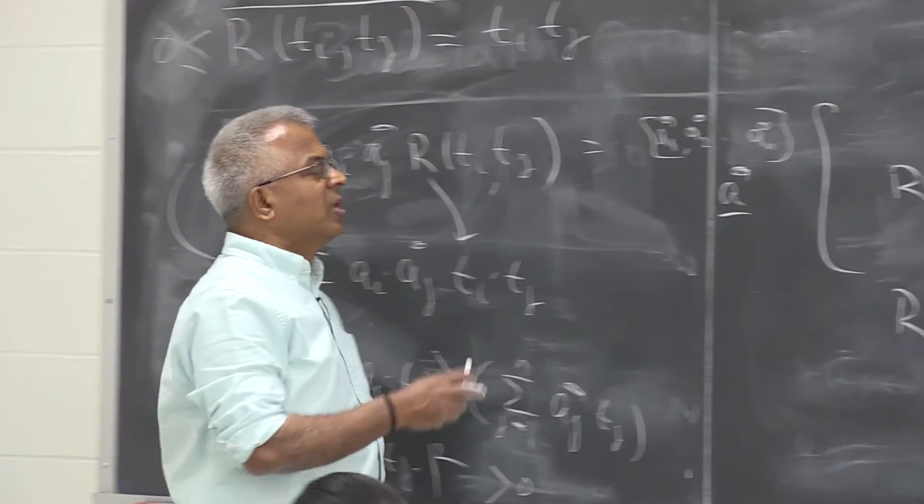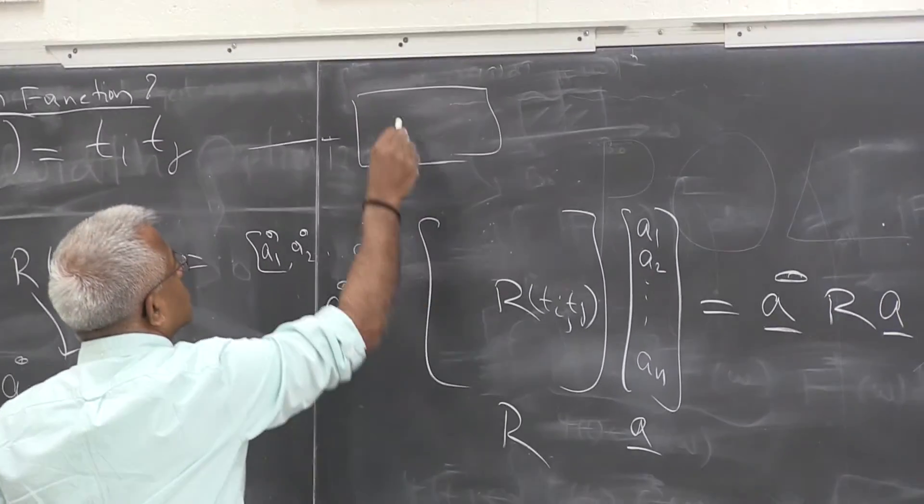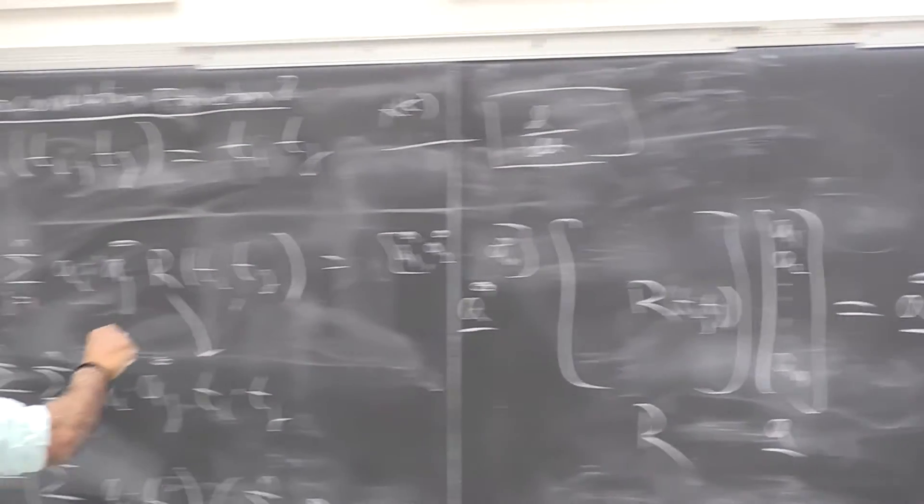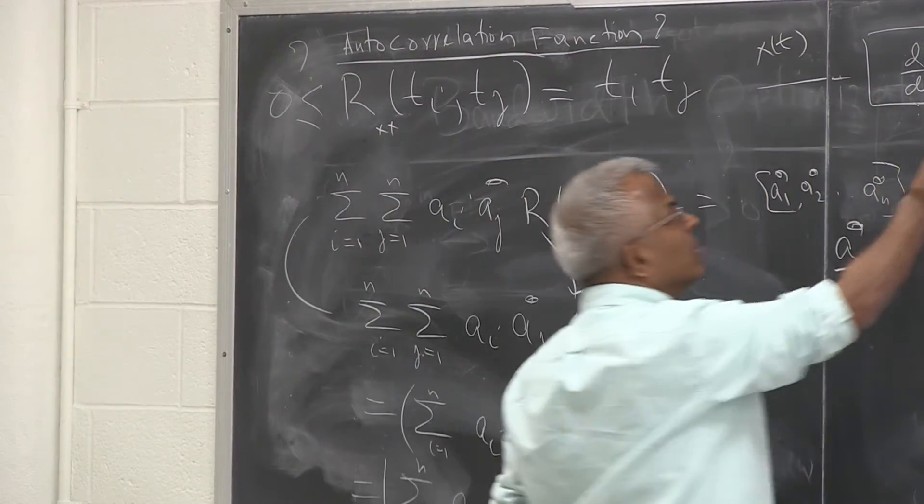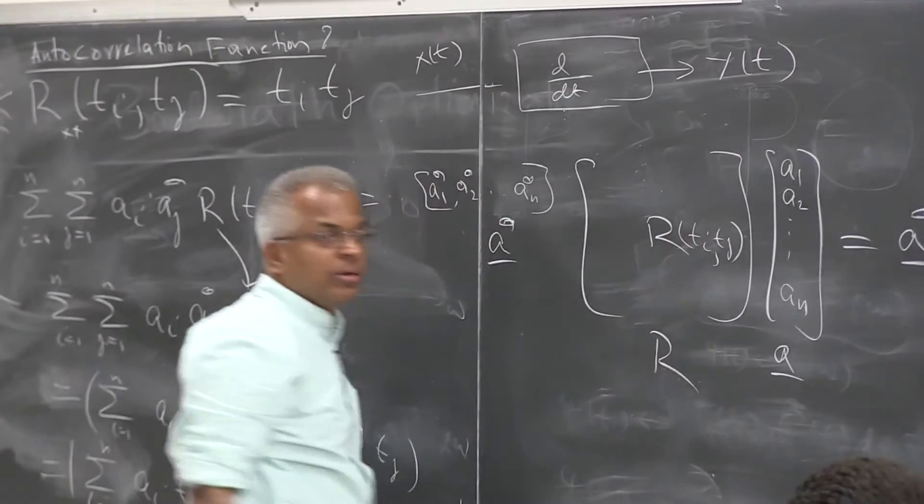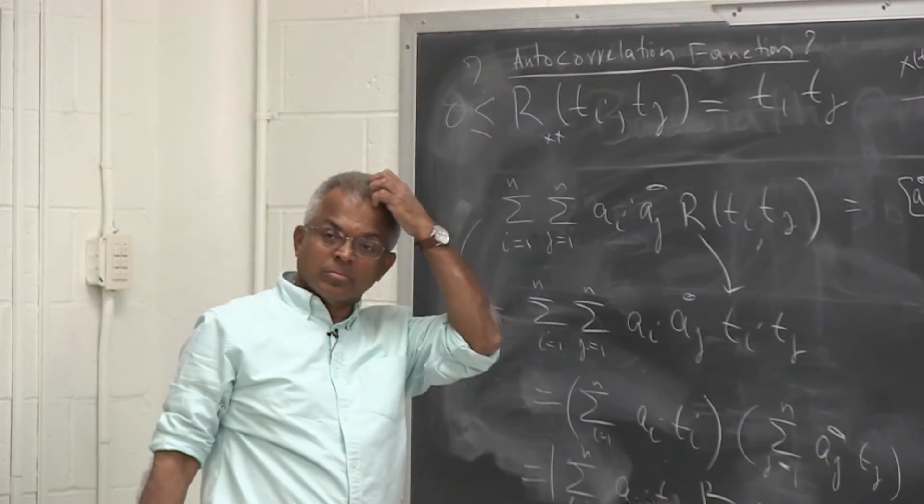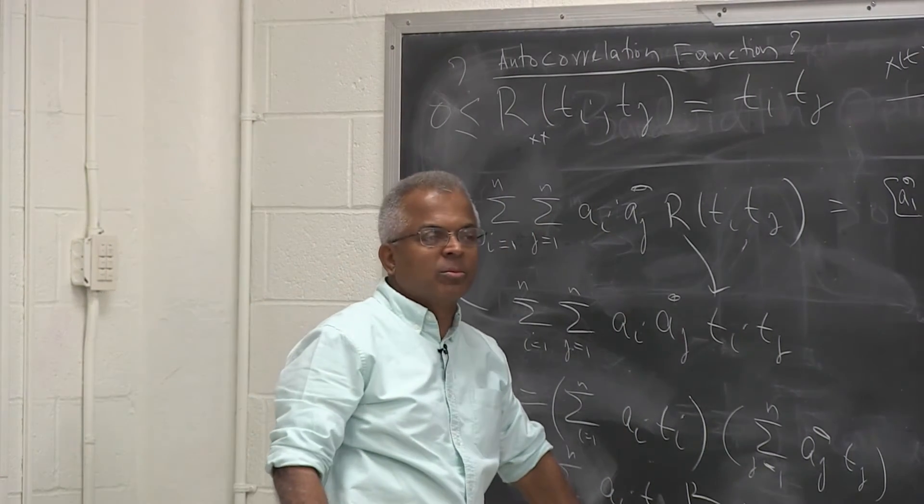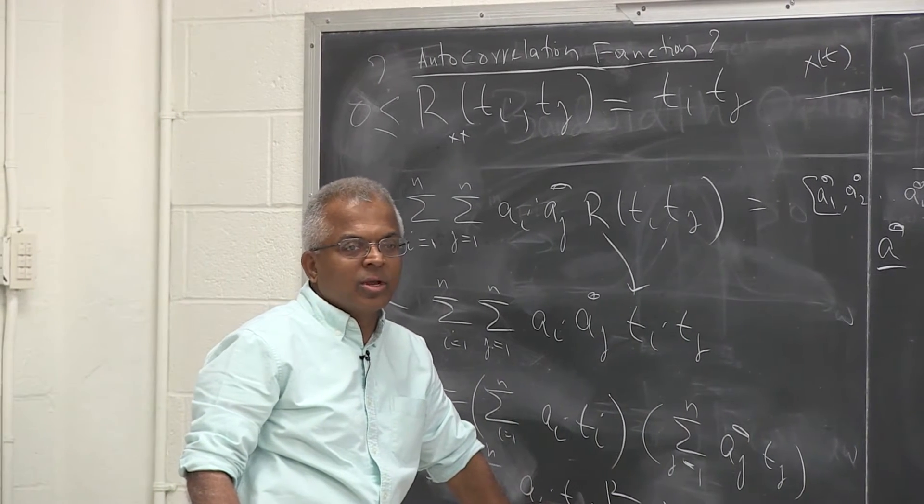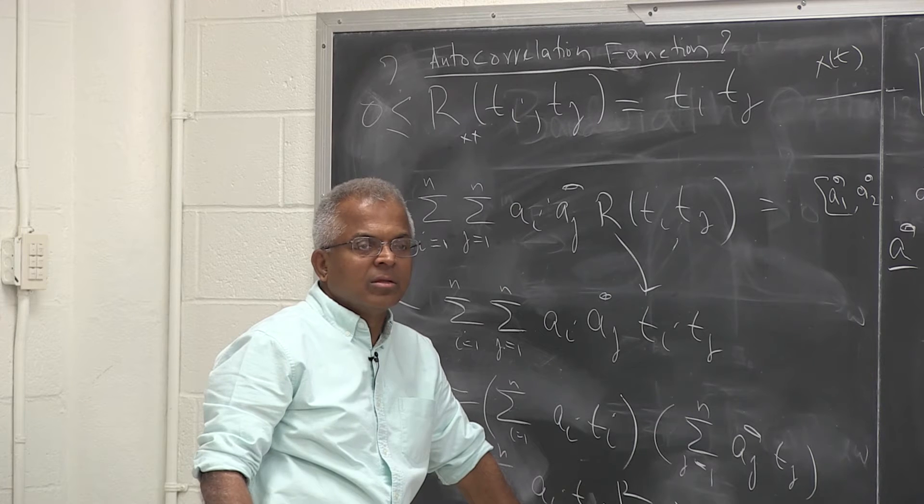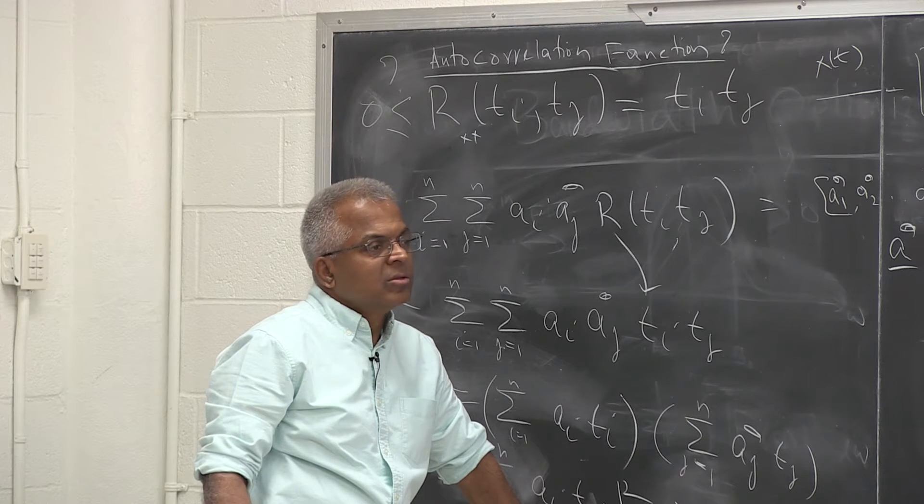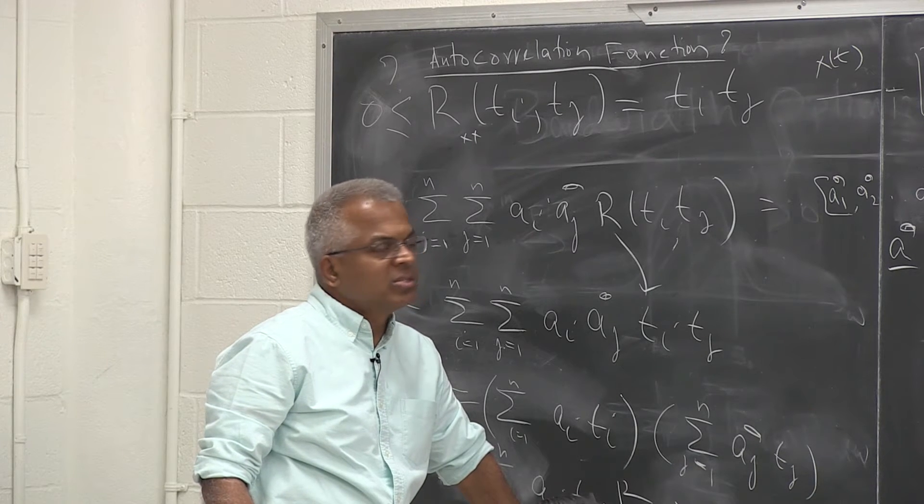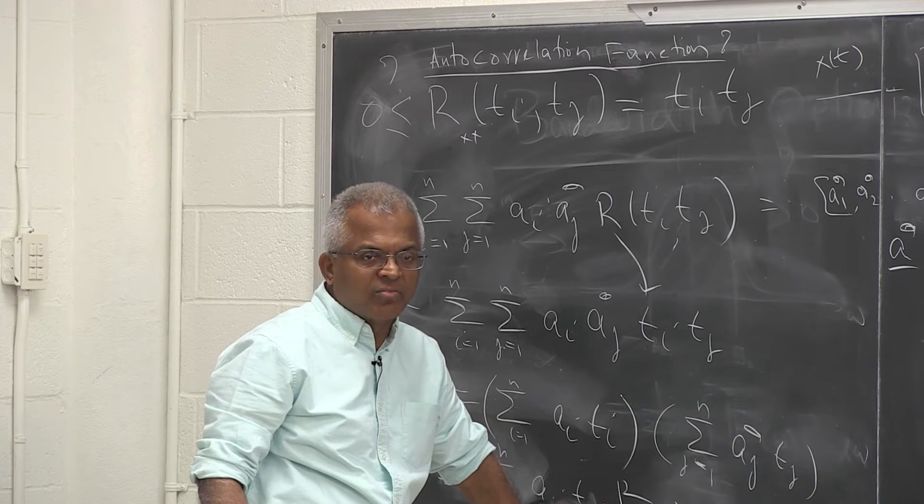So if this process is, anybody? What happens if I pass this process through a differentiator? So let me call this process to be x of t. Let me see whether you learned anything. What would be the properties of y of t? Anyone? So this is not wide-sense stationary. So the output is not going to be wide-sense stationary. But what can you say about its autocorrelation function?